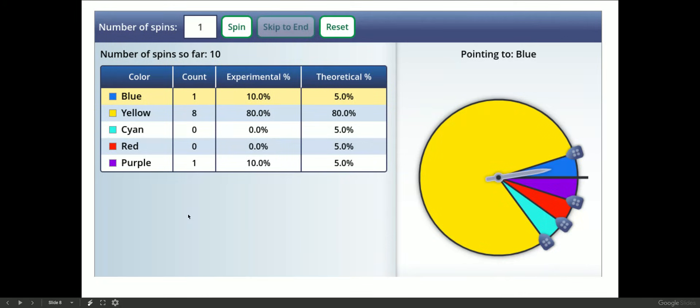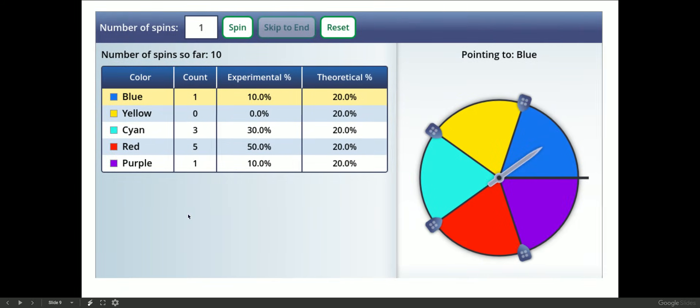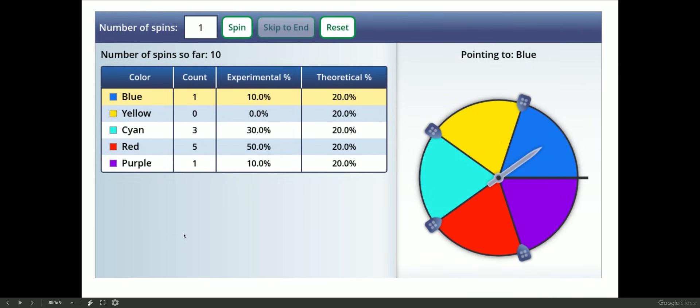And then here we have five equal ones, so in theory we should have an equal chance of getting all of them. But we did one blue, zero yellows, three cyans, five reds, and one purple. So half of my spins landed on red, even though in theory we should have had an equal chance of getting all of them, but in this case it was more likely that I got red for some reason. So that's probability.